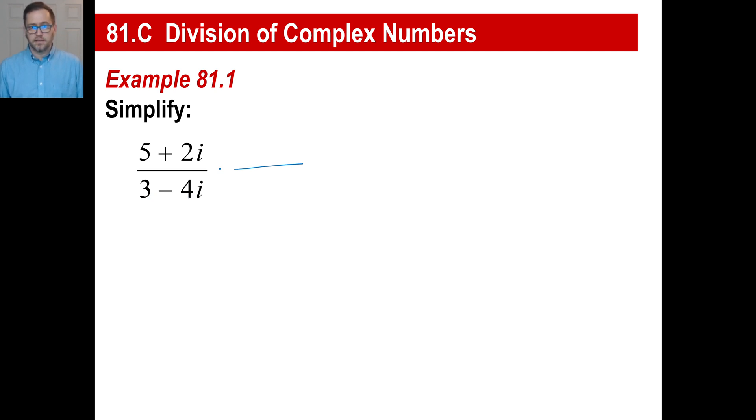So if you have 3 minus 4i in the denominator, we're going to multiply by 3 plus 4i, right? And since it's a fraction, you do the same thing at the top and the bottom. If you want to put parentheses around these to make it easier for yourself, feel free. We've got 5 times 3, 15. We've got 5 times 4i, 20i. We've got 2i times 3, 6i. We've got 2i times 4i. That is going to be 8i squared. Don't forget, i squared by definition is negative 1. So 8 times negative 1 is negative 8. There's our numerator.